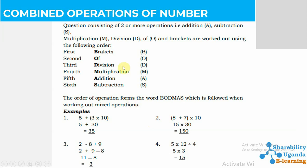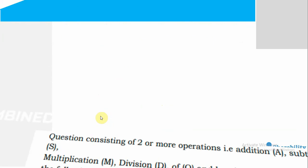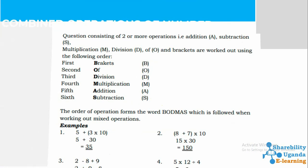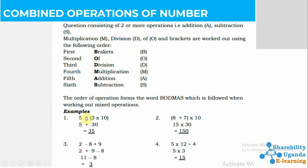Using our method BODMAS — Bracket, Division, Multiplication, Addition, Subtraction — we find that to work out this number we should follow our method. If we have brackets, we first deal with the bracket. Then, after dealing with the bracket, we make the addition. That's why here they say 5 plus 30, after first doing what's inside the bracket, coming up with 35.